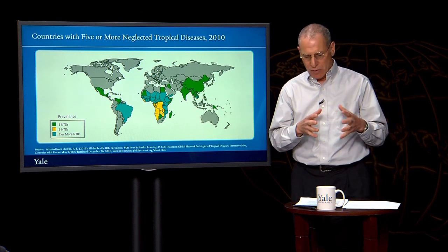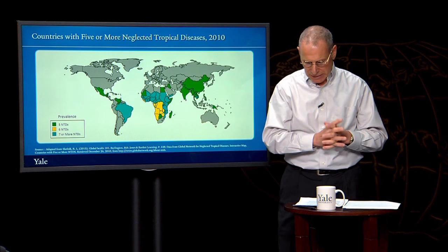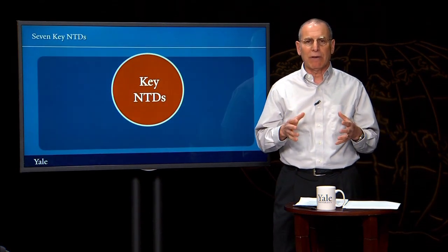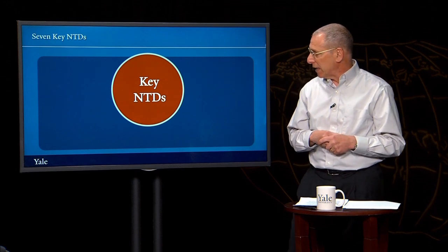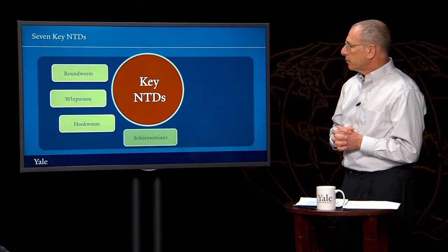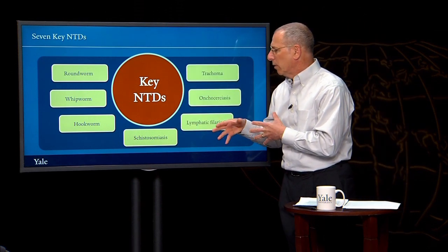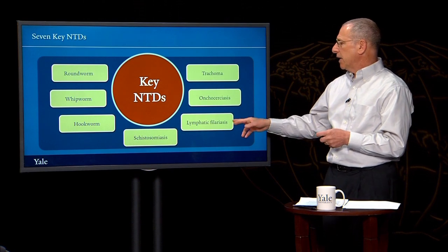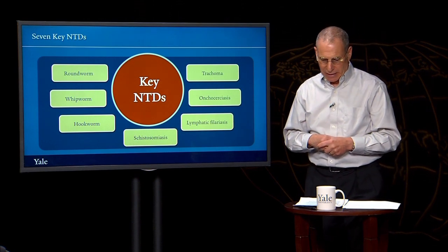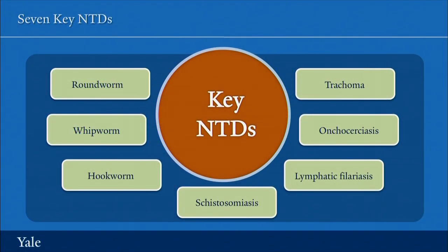The global health community has decided to focus its attention on seven of these diseases, given their prevalence and the manner in which they can be addressed. These are roundworm, whipworm, hookworm, schistosomiasis, lymphatic filariasis, onchocerciasis, and trachoma. Without going into too much detail, let me comment very briefly on how these diseases are transmitted. The soil-transmitted helminths are transmitted when eggs pass from the host in feces and then are transmitted when humans ingest the eggs of the worms.